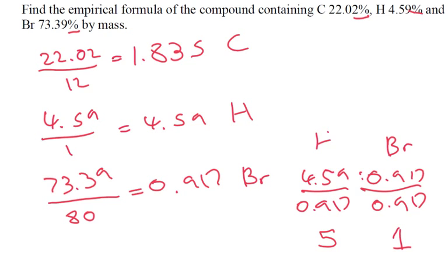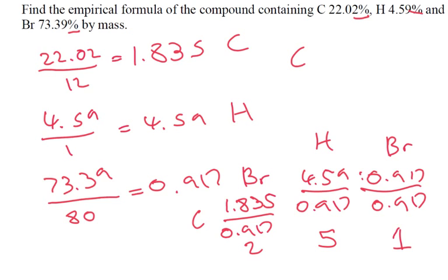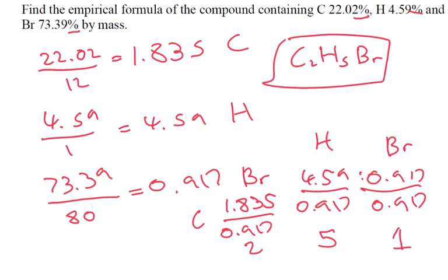And then finally the carbon: 1.835 divided by 0.917 gives us 2. So we've got C2H5Br — that is our final answer.